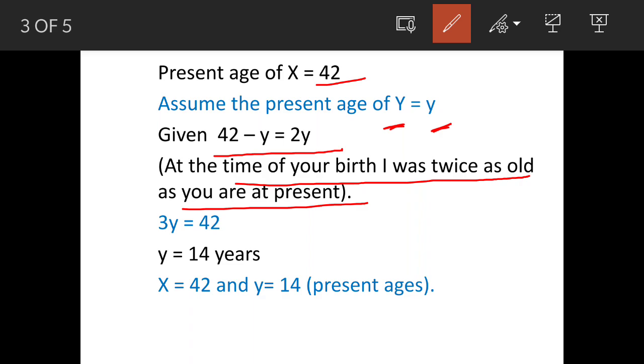So his present age minus the age of Y. He is saying that I was twice as old so it becomes 2y. So this is how we form this equation. This equation formulation is actually key to the answer.